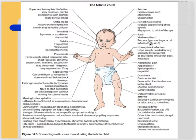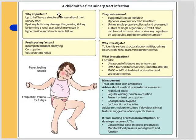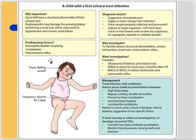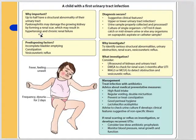A urine sample is needed for any serious febrile illness that does not settle. UTI is quite important in children because the presentation can be non-typical. Up to half of children who have a UTI have a structural abnormality of the urinary tract, and pyelonephritis especially may damage the growing kidney by forming renal scars, which may result in hypertension and chronic renal failure.